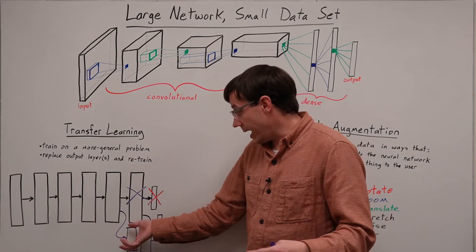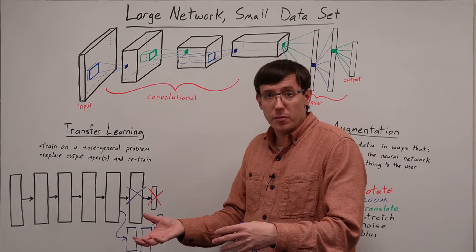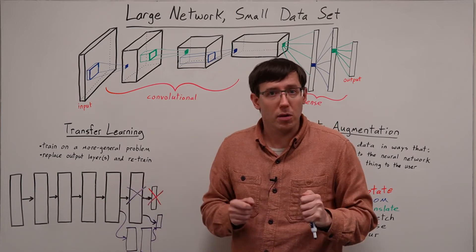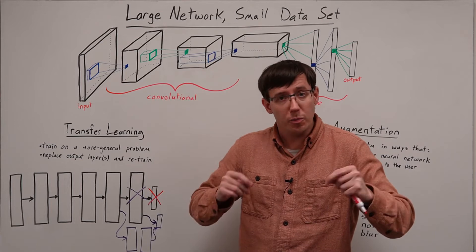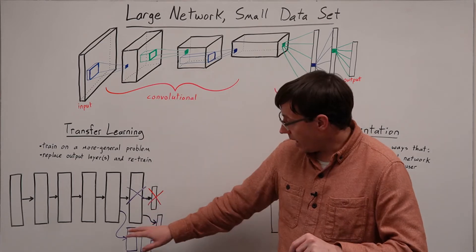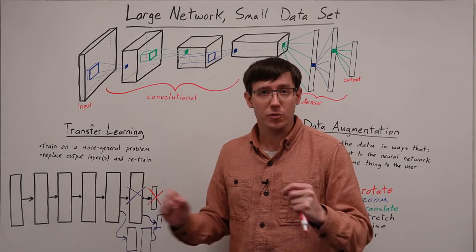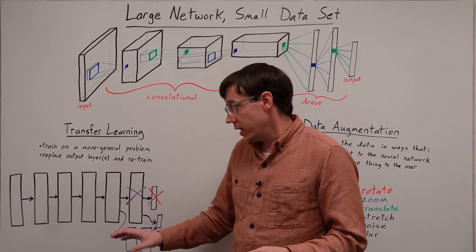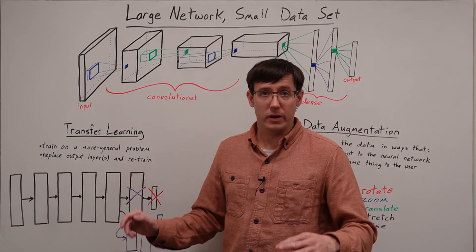And if we wanted to, we could add on multiple layers to do more sophisticated processing of the training that we're doing for our problem. Another option that's available to us which can help ensure that any useful processing these early layers are doing gets preserved is when we are retraining, we could explicitly freeze the weights on those earlier layers.